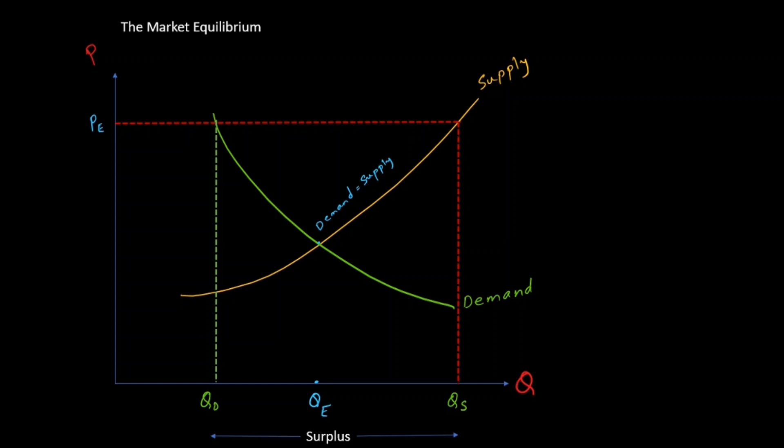As per the law of demand, whenever the price falls the quantity demanded starts increasing. The question is: how far will the price fall? Whenever there is a surplus, the price will drop until the surplus goes away. When the surplus is eliminated, the quantity supplied just equals the quantity demanded — the amount producers want to sell exactly equals the amount consumers want to buy.